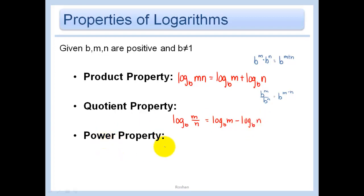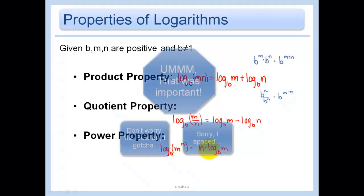Finally the power property says log base b of m to the n power is equal to n times log base b of m. Please note that I'm doing log base b of this whole m times n and I'm doing log base b of m divided by n. Log remember is a function so it's log base b of something it's not log base b times something and that's very important.